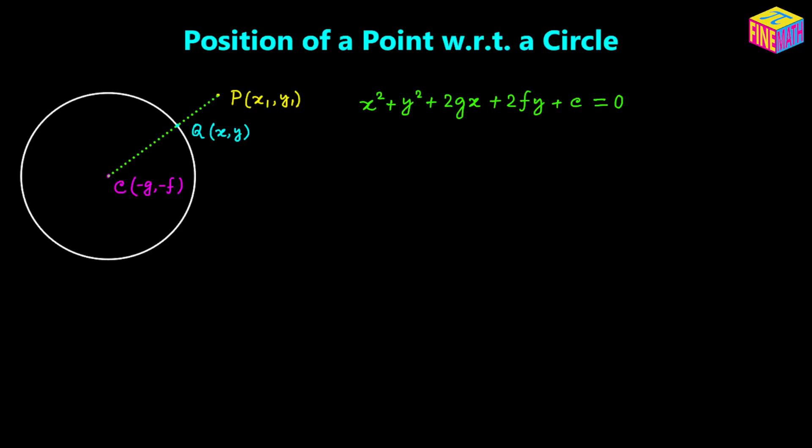If distance CP is equal to the radius, then point P will be on the circle. And if distance CP is less than the radius, then the point will be inside the circle. Now let's try to calculate the length of line segment CP.